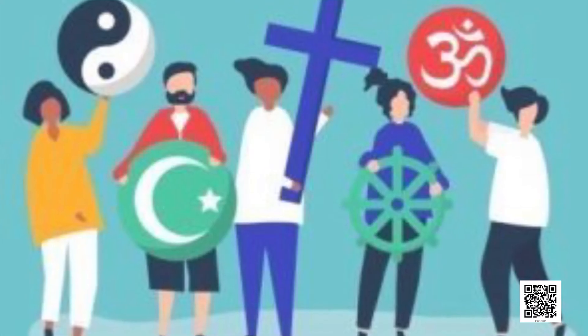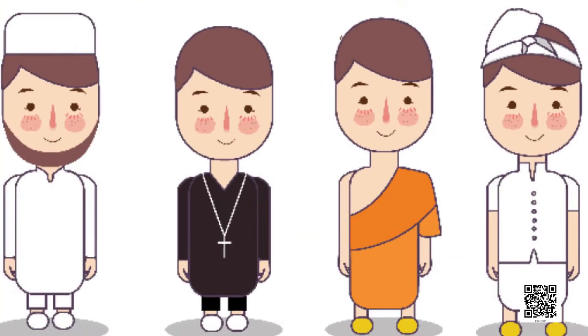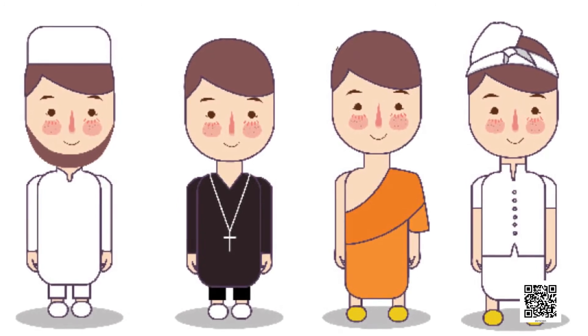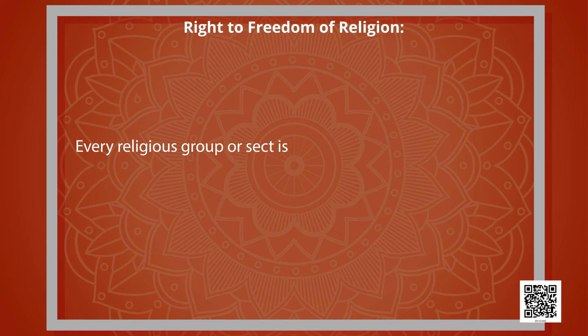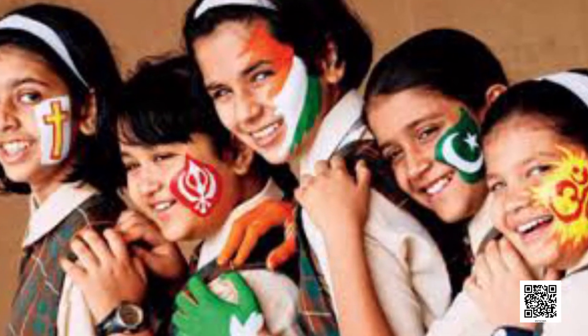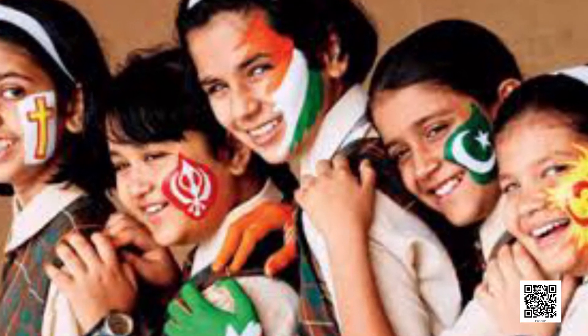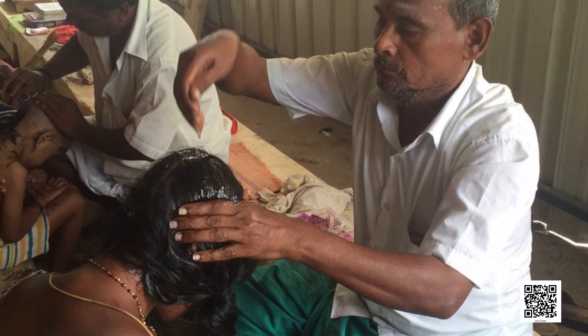Right to Freedom of Religion — the constitution gives every person the right to follow a religion of their choice. The government does not interfere in the religious matters of its citizens. Every person has the right to profess, practice, and propagate their religion. Every religious group or sect is free to manage their religious affairs. But a person cannot compel another person to agree to a particular religion. A person is free to convert to any religion of their choice. Freedom of religion does not mean doing anything in the name of religion — for example, nobody can force a widow to tonsure her head, and nobody can perform animal sacrifice in the name of religion.